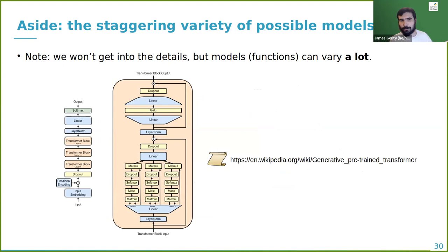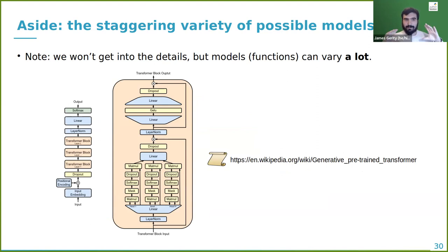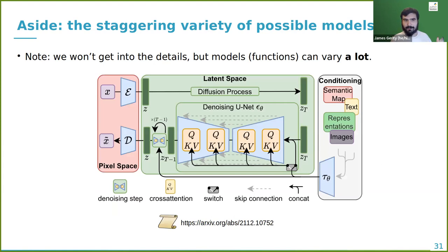GPT, the Generative Pre-trained Transformer, is also a function parameterized by weights. Machine learning papers often show these as deceptively simple block diagrams where each block hides many more operations inside. Latent diffusion architectures take this even further — they're so complicated that a new visual language has been invented to write them down, with blocks that contain other blocks.